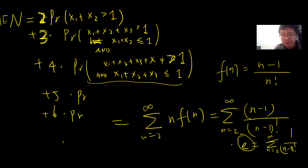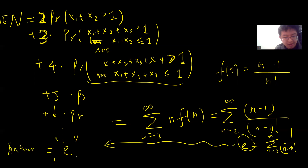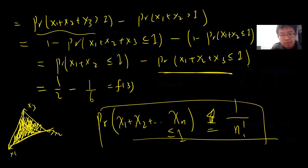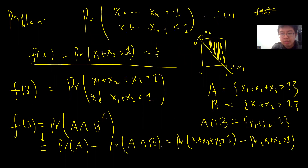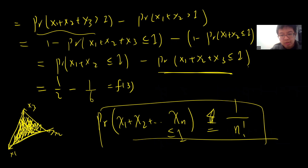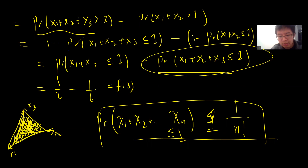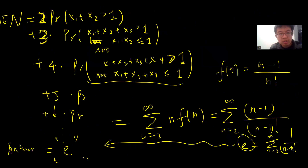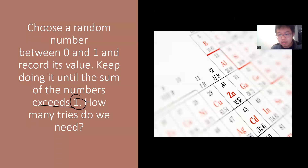So the answer is the natural constant e. The proof is very simple. The most commonly used tool in this type of problem is the formula: P(X1+X2+...+Xn ≤ 1) = 1/n!, which can be proved using calculus. See you in the next video.